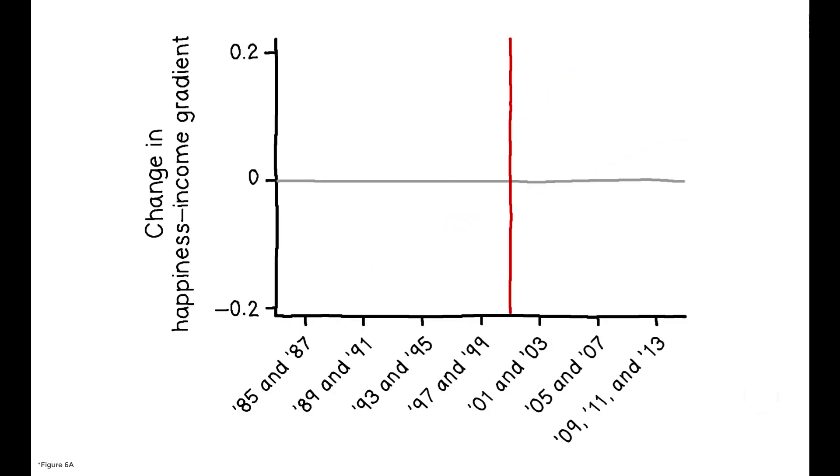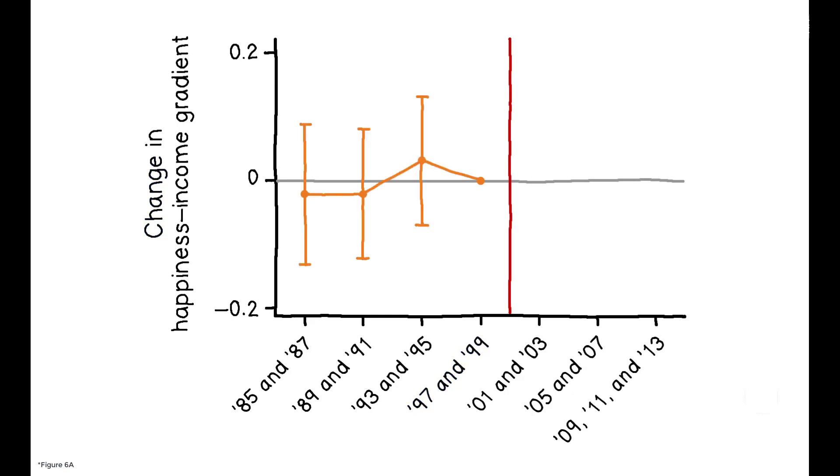This figure shows the estimated evolution of the gradient over the 1985 to 2013 period. Each point corresponds to the change in the gradient relative to 1997 through 2000. Pre-2001, the gradient remained constant, but then increased after the online list became available, and remained high thereafter. The corresponding magnitudes point to a 29% increase post-2001.